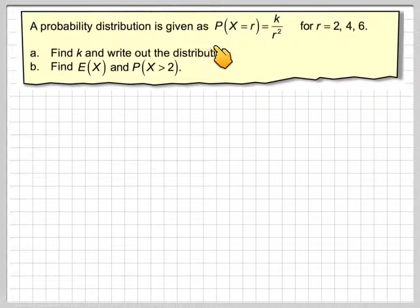So it says a probability distribution is given as P(X = r) = k/r² for r equal to 2, 4 and 6. Find k and write out the distribution.